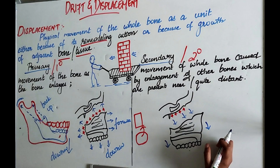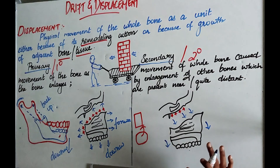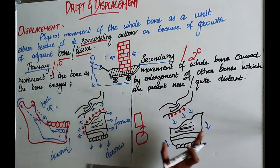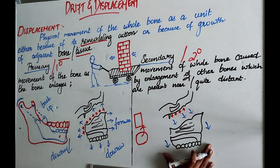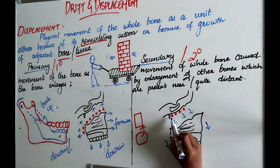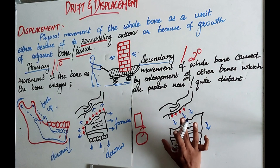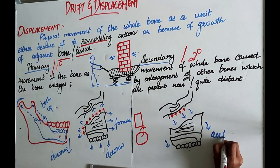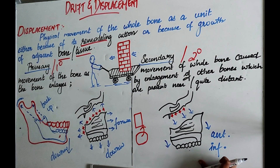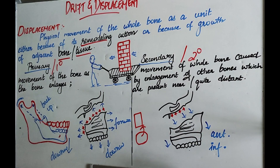Coming to secondary displacement. Secondary displacement is the movement of the whole bone caused by the growth of a bone which is either near to it or at a distance. The bone itself does not undergo growth, but a nearby bone undergoes growth and that causes the movement of this bone. Using the same maxilla as an example — unlike in primary displacement where the plus sign was on the maxilla itself, here the plus sign is near the cranial base. Growth of the cranial base pushes the maxilla in an anterior and inferior direction. So growth of another bone is causing the physical movement of the maxilla — that is secondary displacement.